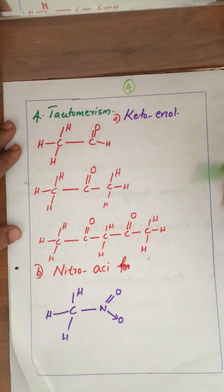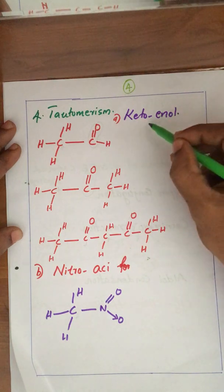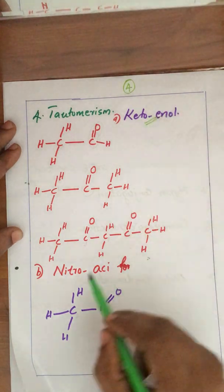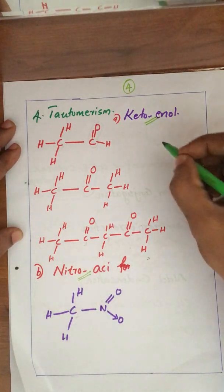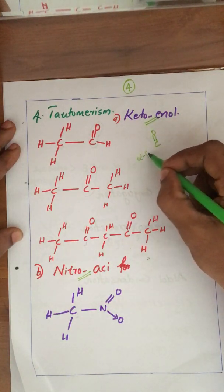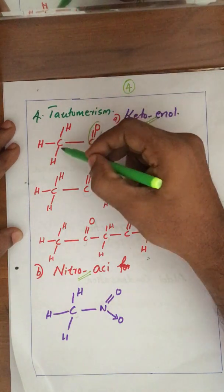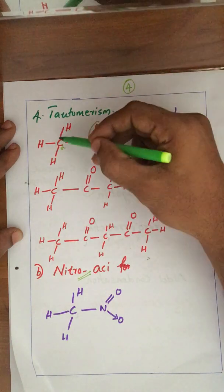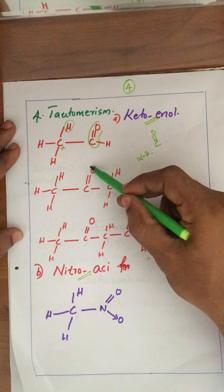You may have heard about tautomerism. I will give a detailed class on tautomerism in the next lessons. There are two types of tautomerism: keto-enol tautomerism and nitro-aci tautomerism. The condition for keto-enol tautomerism is that there should be a C=O group and there should be an alpha hydrogen. In this molecule, there is a C=O group, so this is the alpha carbon atom, and the alpha hydrogen is also present — this can undergo tautomerism.